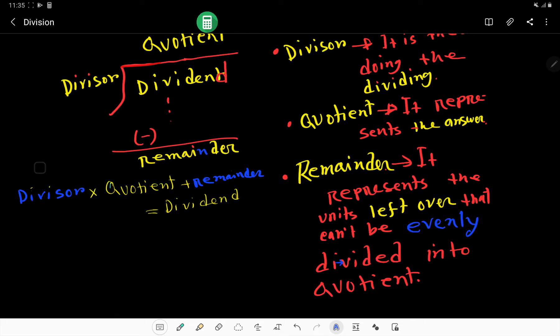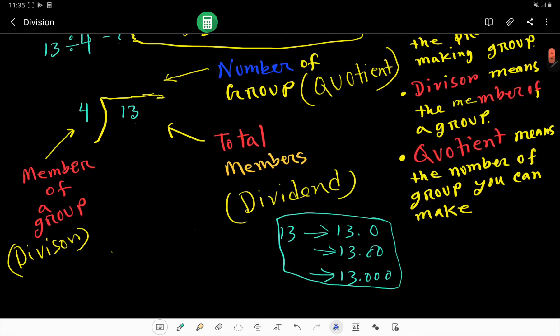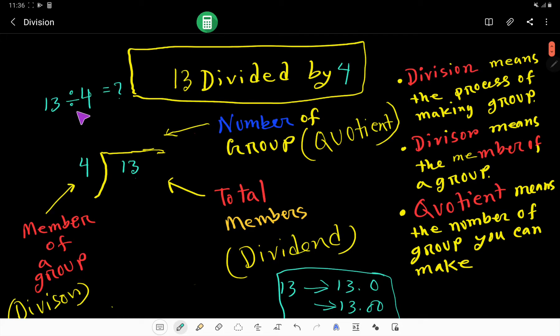Divisor means member of a group. Quotient means the number of groups you can make, and each group will have 4. Dividend means the total members, which is 13. Division means the process of making groups.